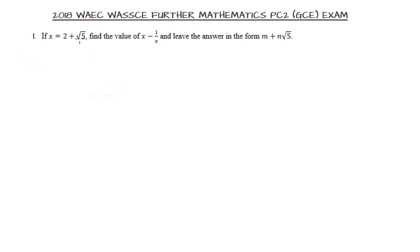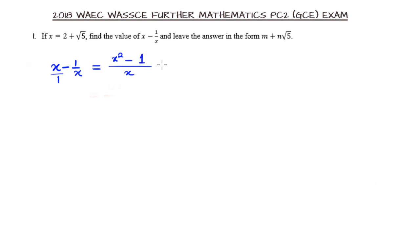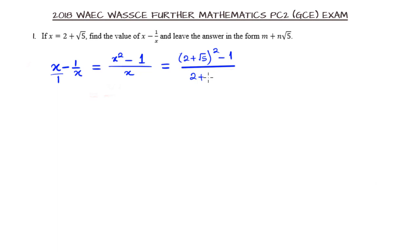In this question, we are to find the value of x minus 1 over x and leave the answer in the form m plus n root 5. If we express x minus 1 over x, we can find the LCM — this will be over 1, and x times x will be x² minus 1. We have been given x to be 2 plus root 5, so we put in that value: 2 plus root 5 raised to the power 2 minus 1, all divided by x, which is 2 plus root 5.